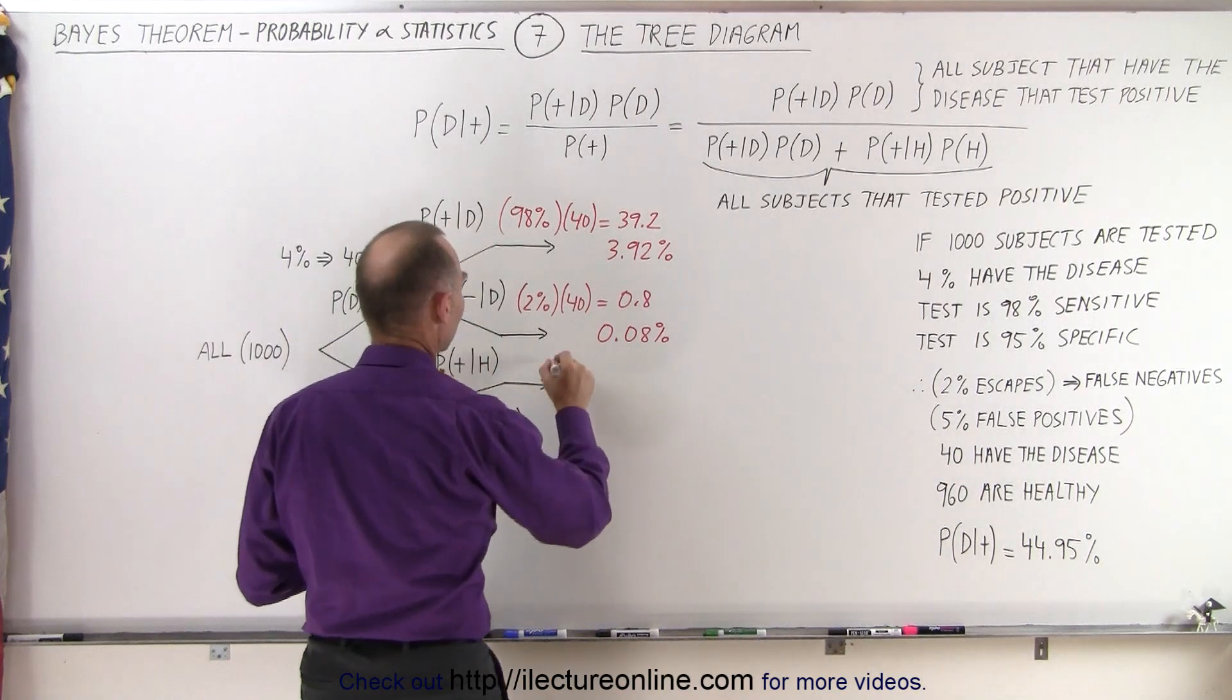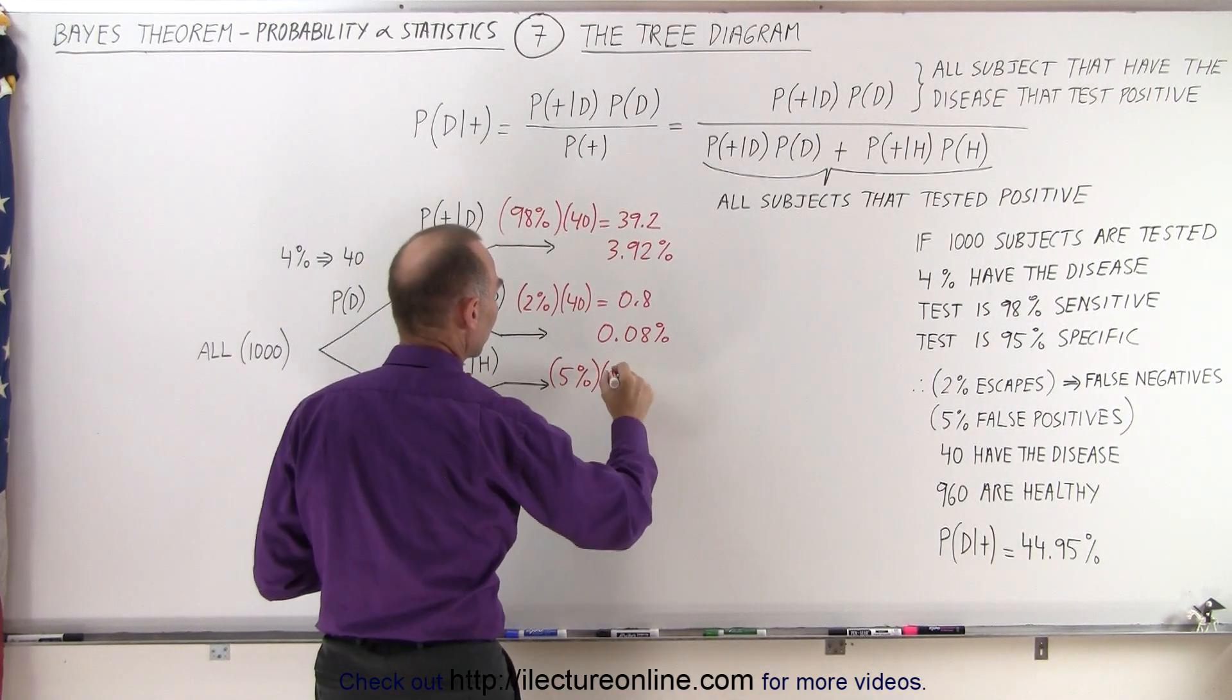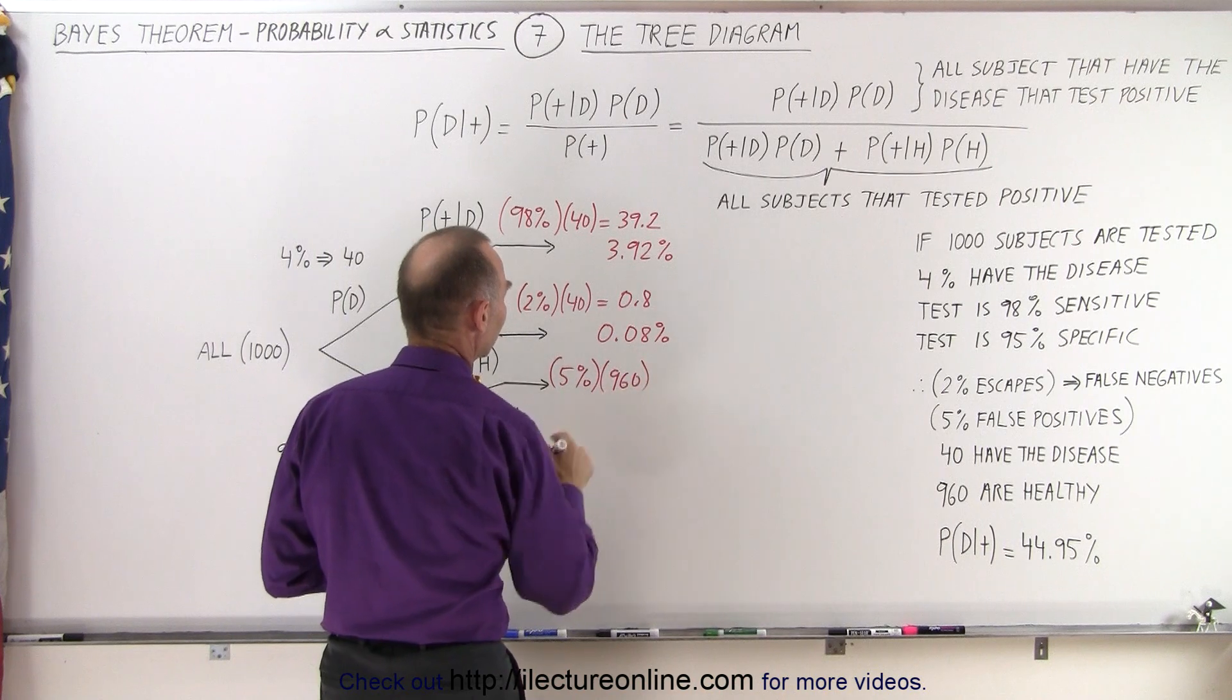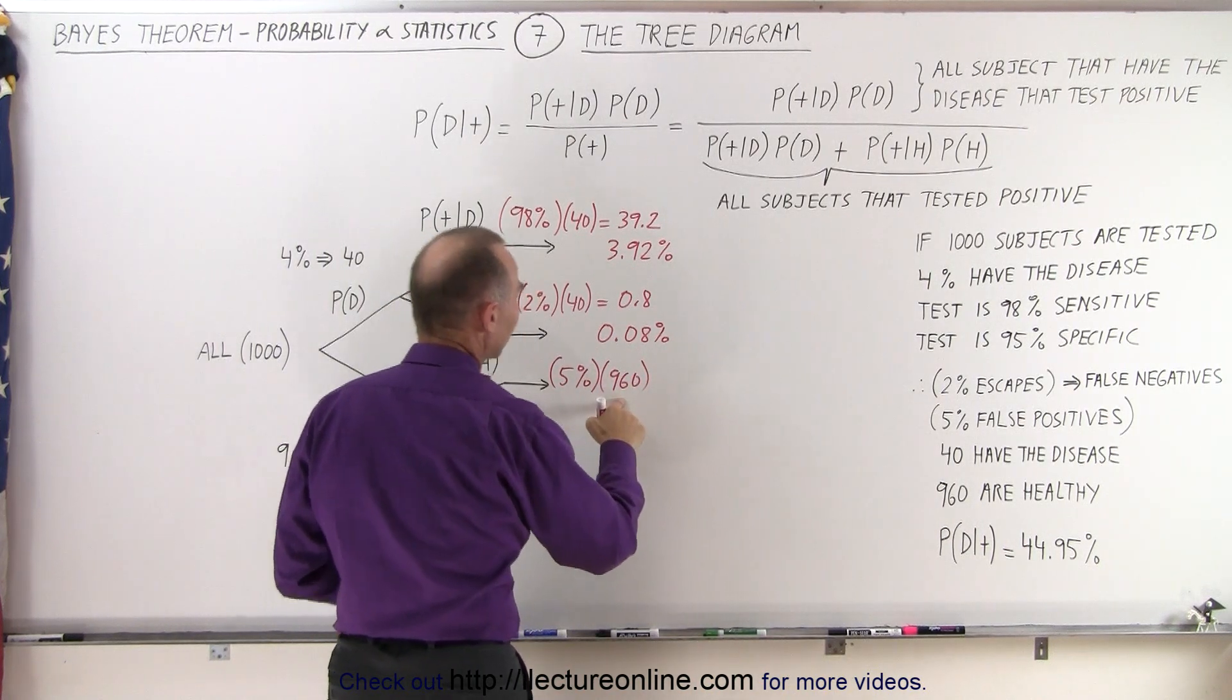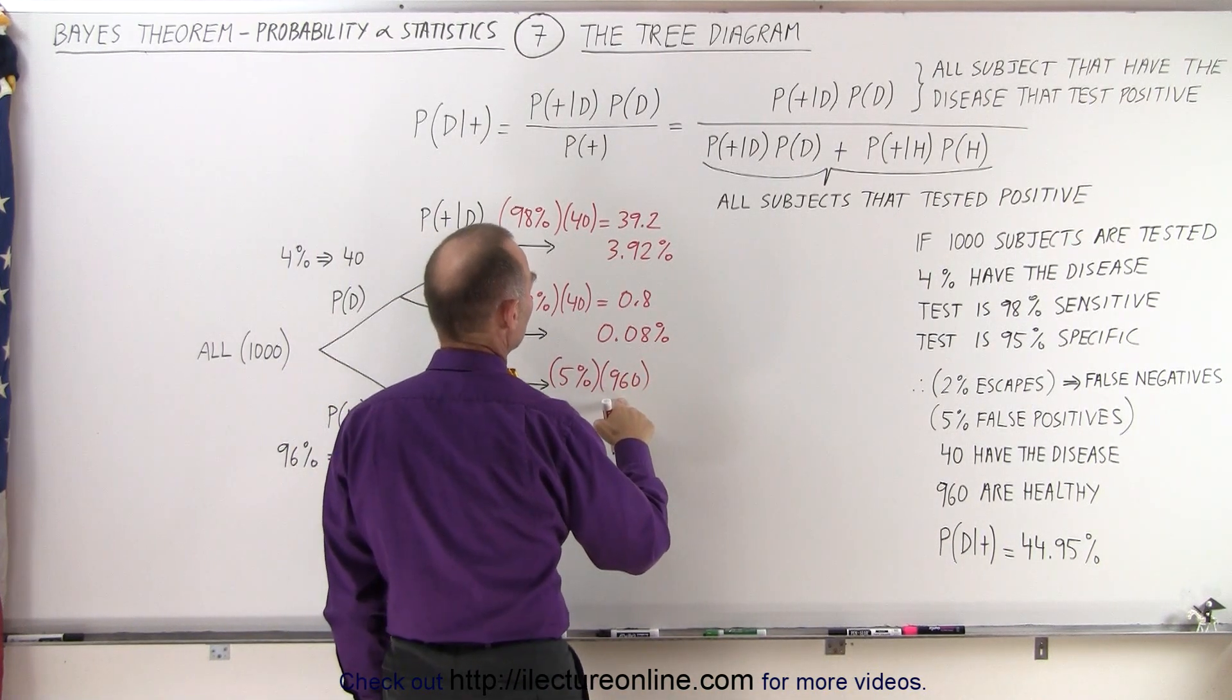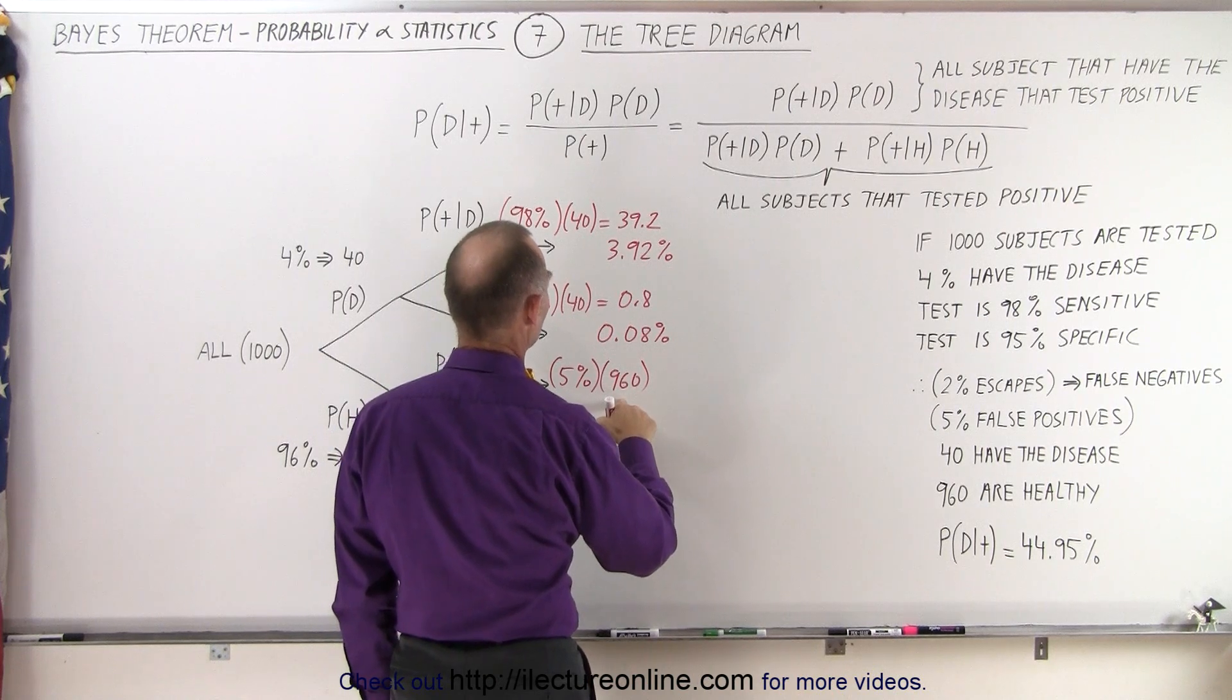So this becomes 5% times the number that are healthy, which is 960. 5% of that, that would be 48, that would be 4.8% of that. So it would be equal to 48, which is 4.8%.